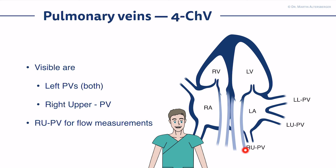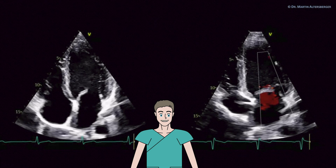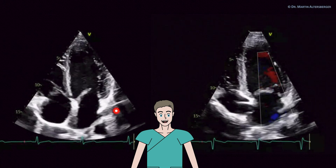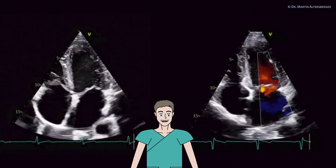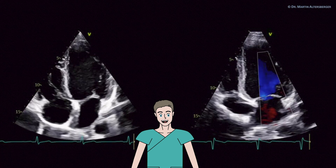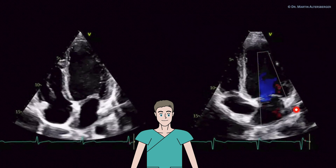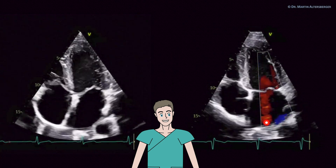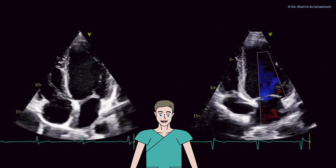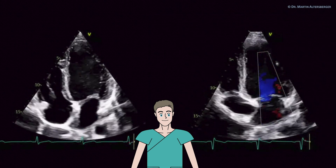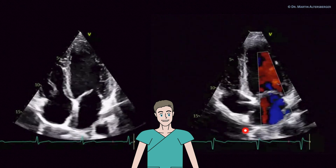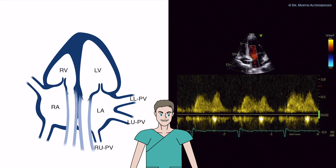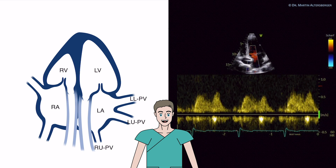In TTE it is sometimes very difficult to visualize all four pulmonary veins, but keep in mind that the right upper can be visualized and used for measurements optimally. You see here a vascular structure, and here another structure that might be the left atrial appendage. With color Doppler, we do see flow coming into the left atrium. We have to find the right upper pulmonary vein — optimizing towards it and placing the pulsed wave Doppler, we get a signal.